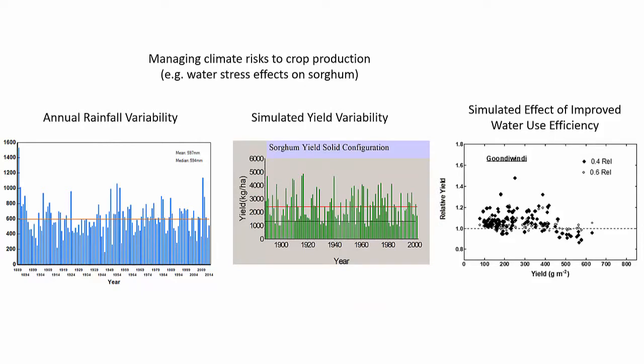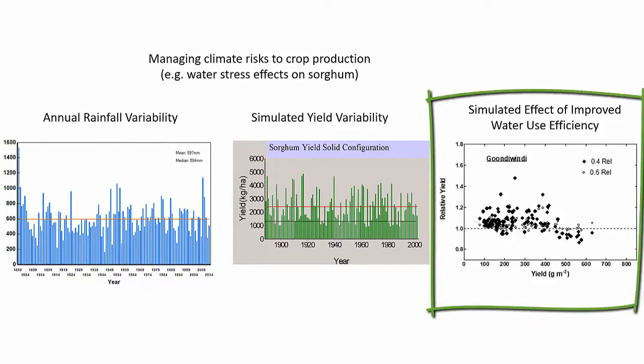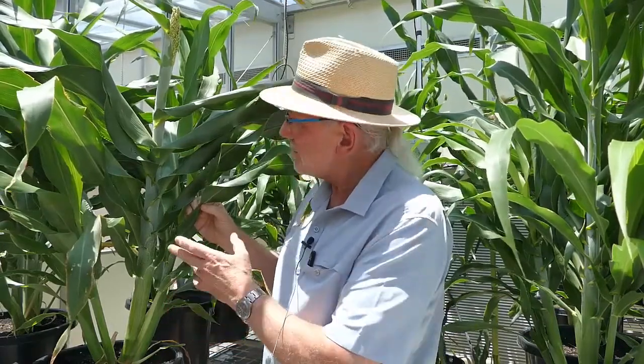Beyond that, we want to ask: what if we can change the opening of stomata, or the conductance in the plant? If we can somehow modify the stomata and change how the plant uses water, making it slightly more efficient, what does that do? When we input that into a crop simulation, it demonstrates that we can get enhanced yield in drier seasons, because if we restrict the stomata somewhat, the plant doesn't lose as much water in taking up CO2.